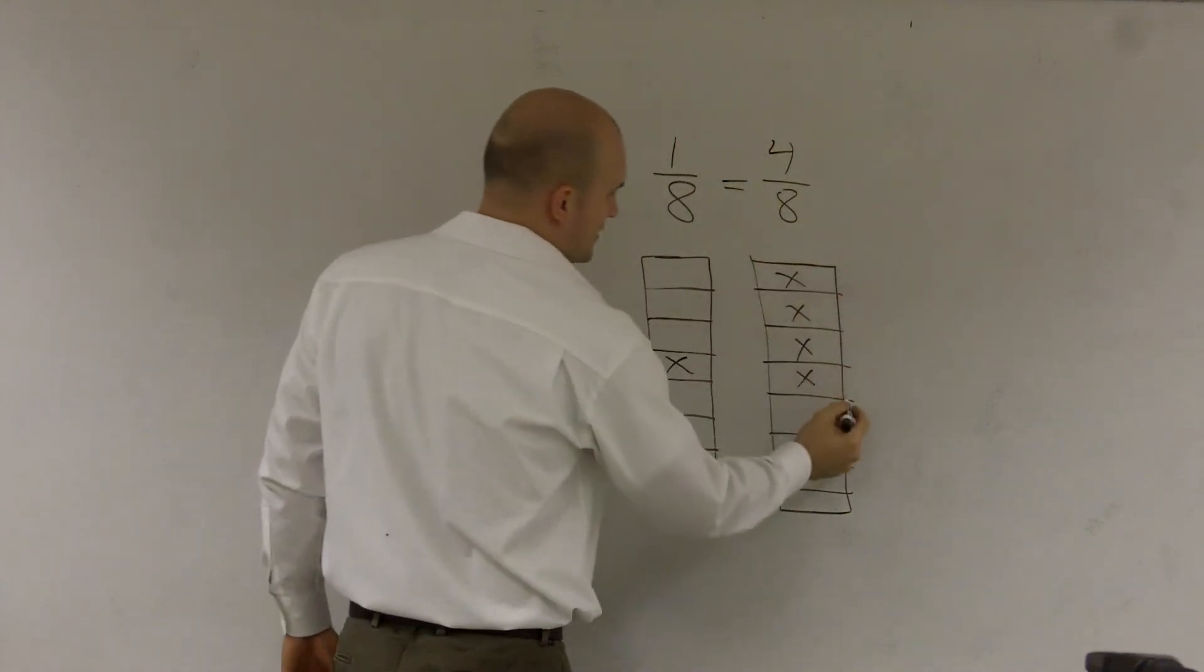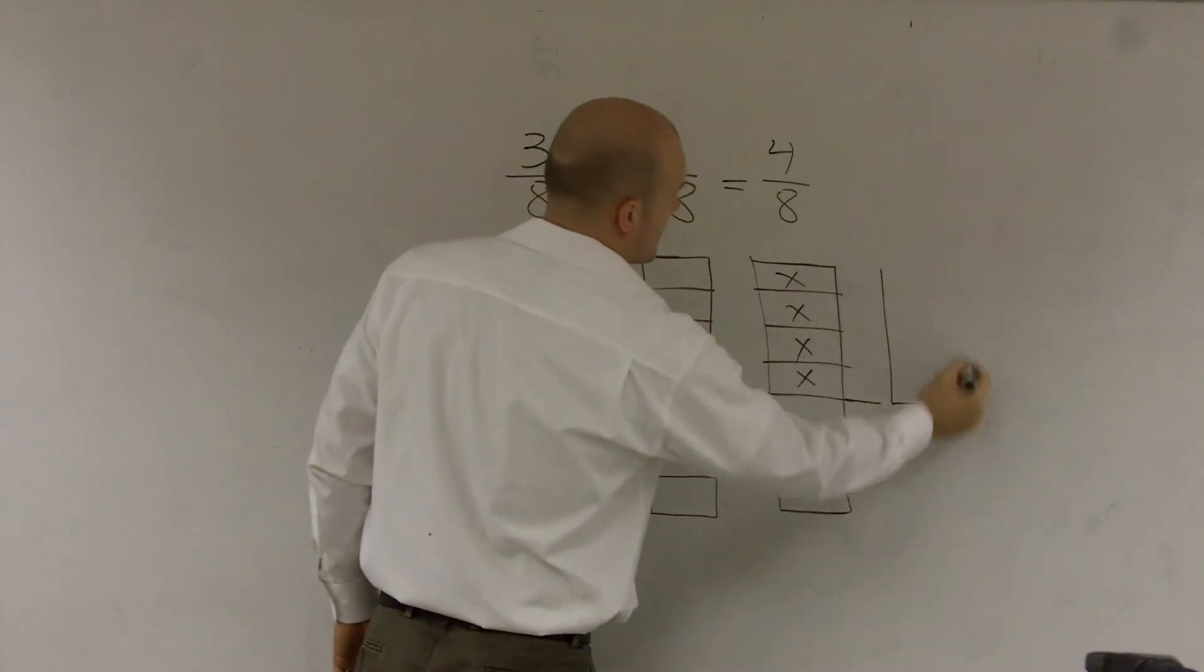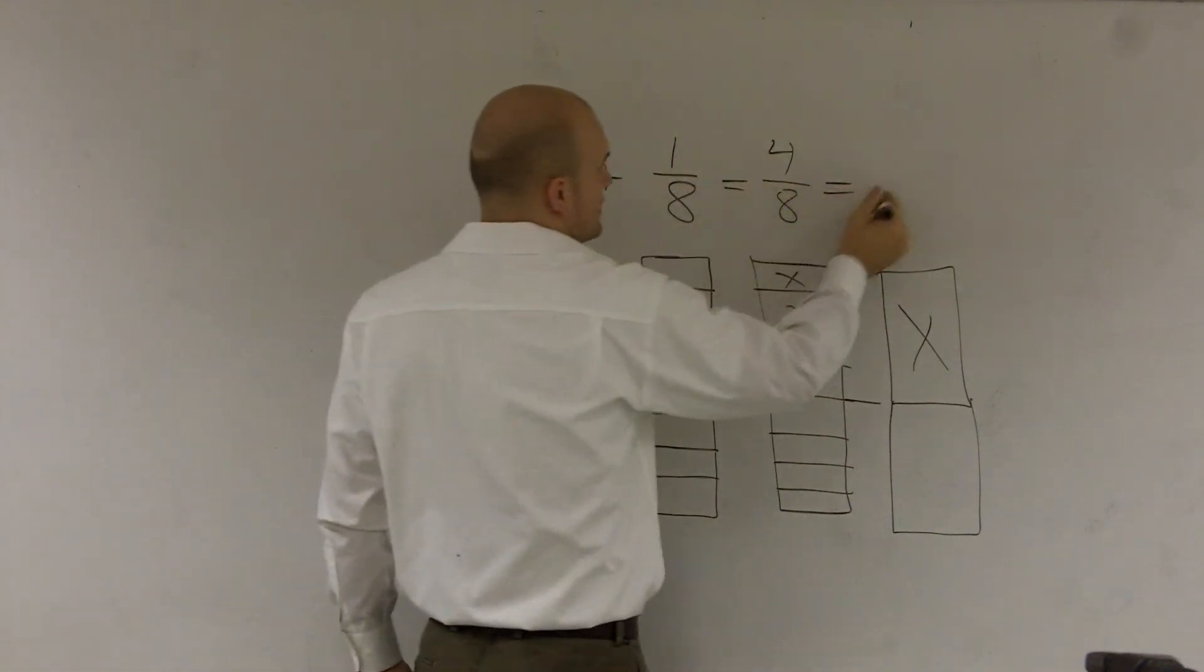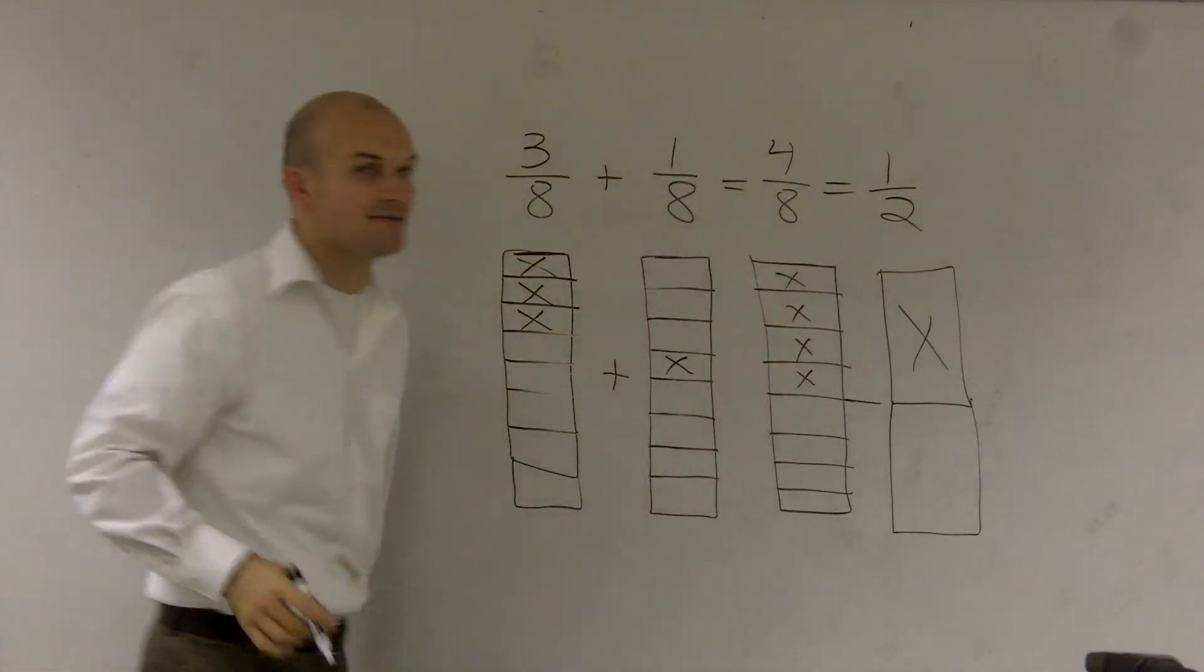Which is roughly, if you kind of break this up, the same thing as one half. So four eighths is equal to one half. Alright?